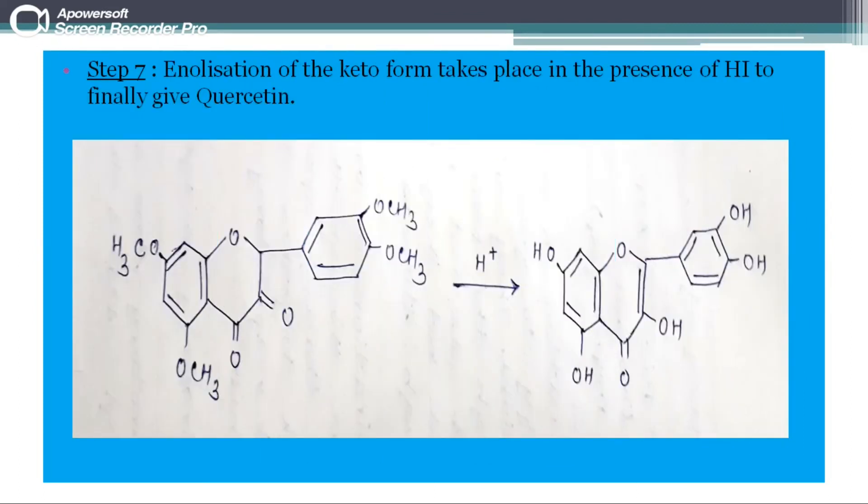Enolization of keto form in the presence of hydroiodic acid which provides the proton takes place and quercetin is obtained.